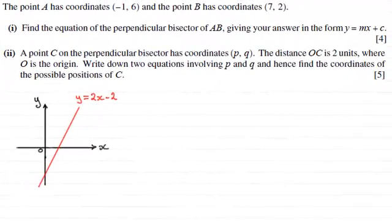Hi there. Now before we start on the last part of this question, just to recap, we were given the points A had coordinates (-1, 6) and the point B has coordinates (7, 2). And in the first part we had to find the equation of the perpendicular bisector of AB, giving your answer in the form y equals mx plus c. And the answer to that was y equals 2x minus 2.